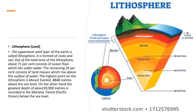Lithosphere. Lithosphere means land. The uppermost solid layer of the Earth is called lithosphere. Earth has got three layers: crust, mantle and core. The uppermost layer is crust, the middle one is your mantle, and the last one is your core. The uppermost layer is also called your lithosphere, land or crust.